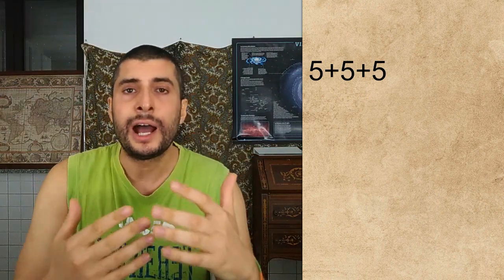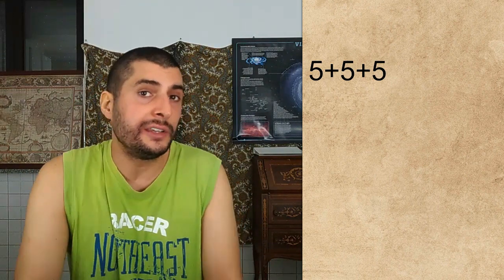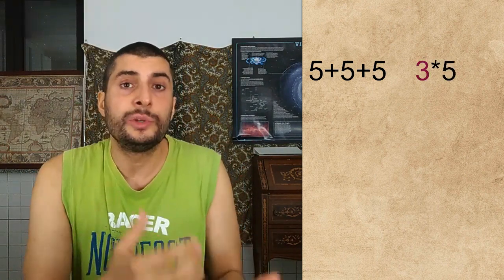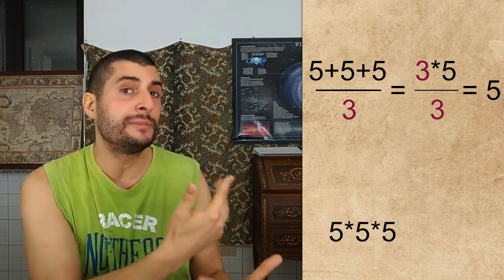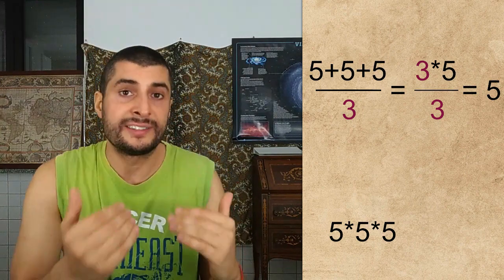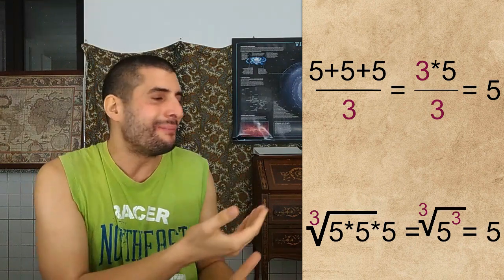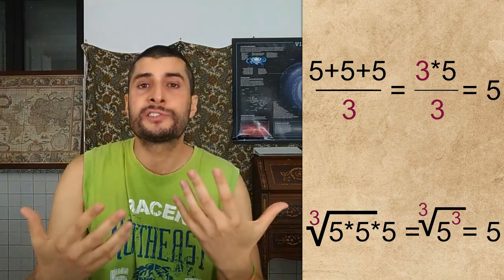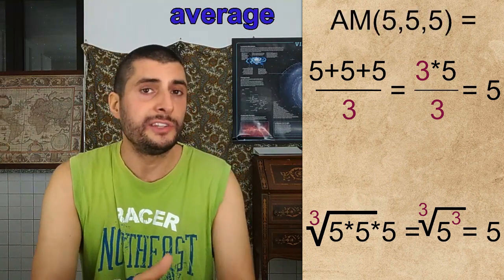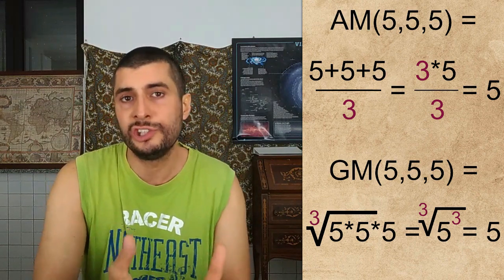Let's start from five plus five plus five. How can I go back to five from this expression? Easy — that's the same as writing three times five, so we just need to divide by three. Similarly, from five times five times five — that's the same as writing five cubed, therefore we can use the cube root. These are the two most common ways to find an average: arithmetic mean, for short AM, and geometric mean, for short GM.